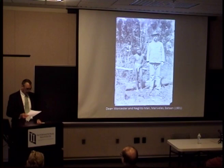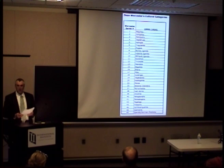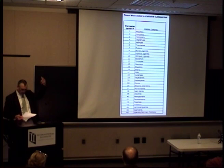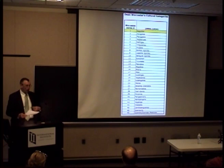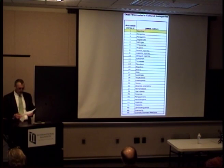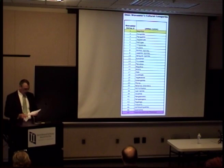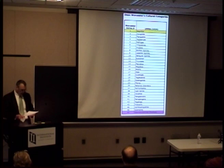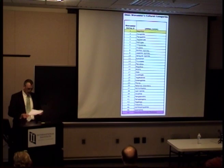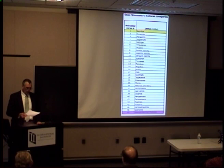The archive of Worcester negatives at the University of Michigan includes 31 different cultural categories, starting with one and ending at 49, but with gaps. This classification scheme was designed hierarchically, with category number one — the Negritos — being the least civilized. Worcester referred to them regularly as a disappearing race who may be a missing link, while the Spanish and German Mestizos, category 49, were the most civilized. It seems that Worcester didn't initially organize his photographs with such a hierarchy in mind.